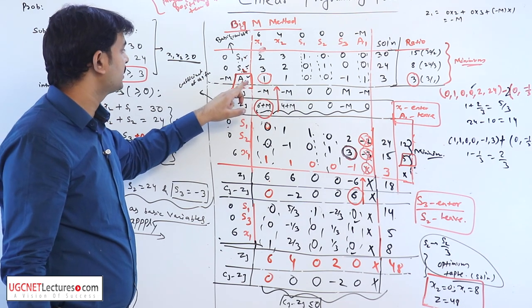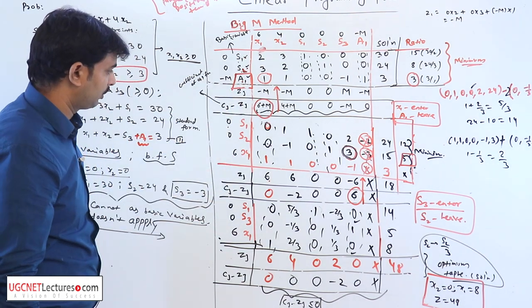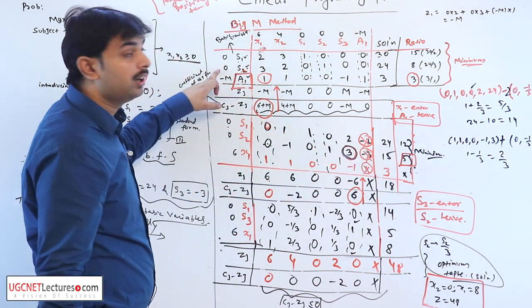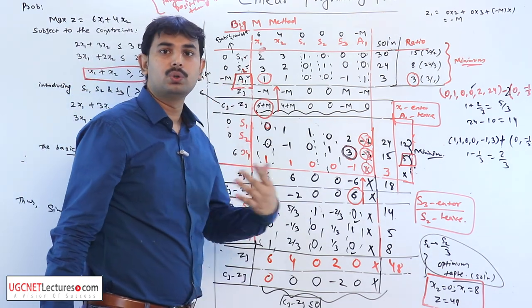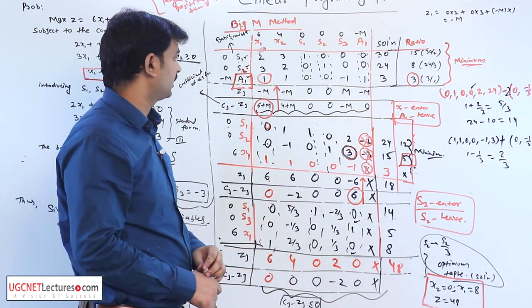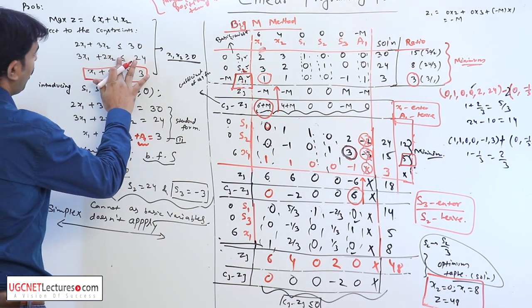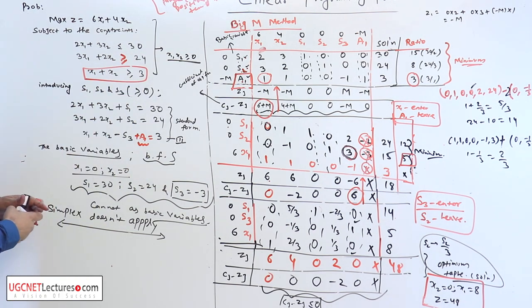We have to remove the artificial variable from the simplex table. Here in first iteration it will remove. In many cases it will remove after two or three iterations, or if the problem has greater than or equal to sign.